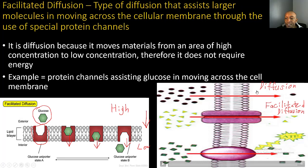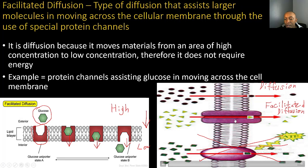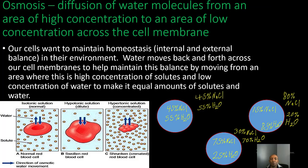Looking at these animations: the top animation shows diffusion and the second shows facilitated diffusion — we'll skip the third animation as it covers active transport, which we'll address later. In both cases, molecules move from an area of high concentration to low concentration, making both passive transport. The difference is that diffusion has no special protein, while facilitated diffusion uses a special protein to allow the molecule to pass through.